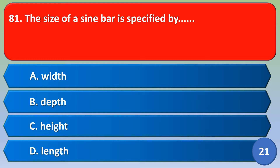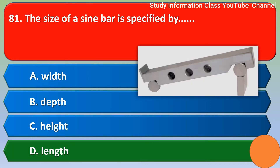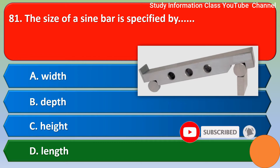Namaste. The size of a sine bar is specified by option A: width, option B: depth, option C: height, option D: length. The correct answer is option D, that is length.